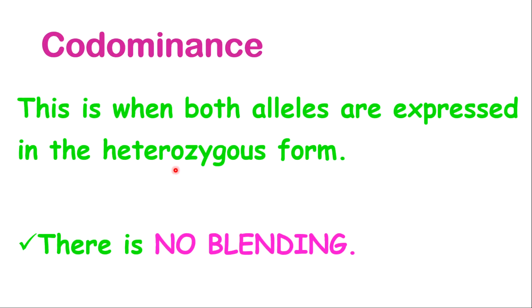Let's look at codominance. Codominance is when both alleles are expressed in the heterozygous form, because neither is dominant over the other. In this case, there is no blending. Sometimes the word 'mixing' is used in codominance, which can be confused with blending, so it's better to simply say that both alleles — neither of them dominant over the other — will both be expressed, with no blending.